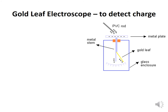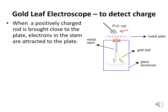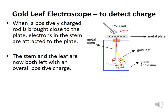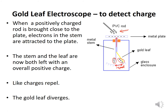Similarly, if you bring a positive plastic rod close to the neutral electroscope, the electrons — which are free to move within a metal — move up towards it. As a result there is an overall positive charge left at the bottom of the rod and on the gold leaf. Because these are of the same kind they repel, and you see the gold leaf going up. The stem and the leaf are now both left with an overall positive charge — like charges repel and the gold leaf diverges. How much it diverges depends on how charged the rod is.